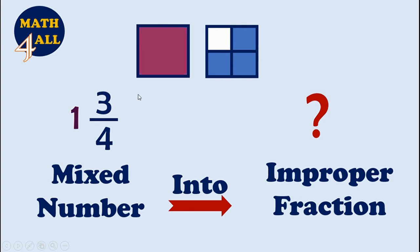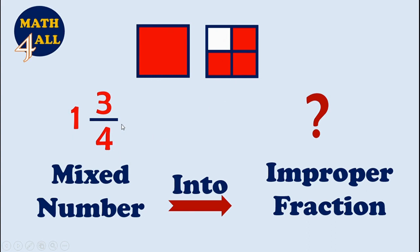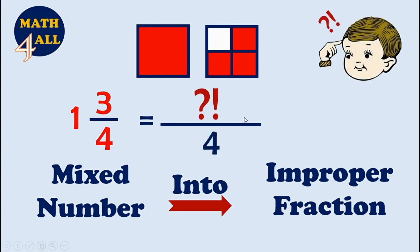Here we have one and three-fourths. Now we need to convert this mixed number into an improper fraction. First, look at the denominator — it will be the same, because the denominator represents how many broken parts are in one shape. So the denominator will be the same. I will write four in the denominator first.